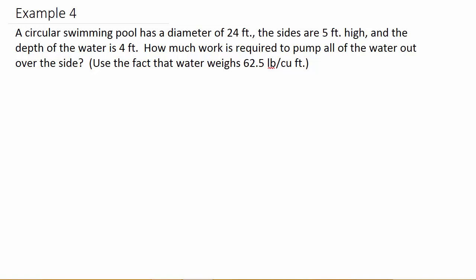So it says we have a circular swimming pool and it has a diameter of 24 feet, the sides are 5 feet high, and the depth of the water is 4 feet. How much work is required to pump all of the water out over the sides? We use the fact that water weighs 62.5 pounds per cubic foot.